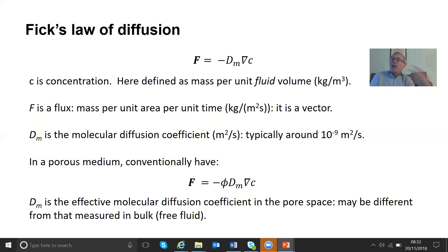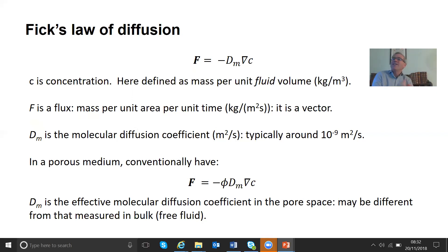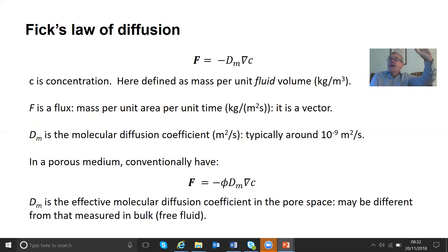You have a flux that's related to the gradient of something, and normally you find that the flux goes from high pressure to low pressure in Darcy's law — so you have a minus sign. The volume of fluid per unit area per unit time is proportional to the pressure gradient, but with a minus sign. Exactly the same with Fick's law: there is a flux of particles from high concentration to low concentration, proportional to the concentration gradient, but with a minus sign.